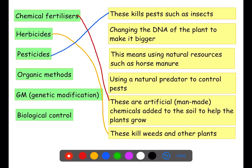Organic methods are natural resources which can be used to increase plant production, such as using horse manure. Genetic modification is where we change the DNA of a plant to make it bigger. And finally, biological control is where you use some sort of natural predator to allow the control of pests.